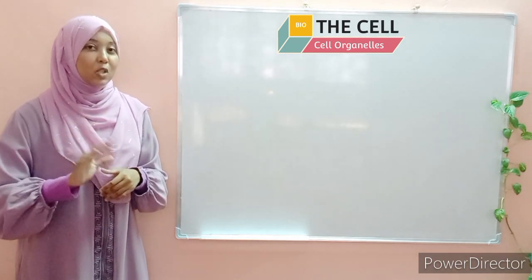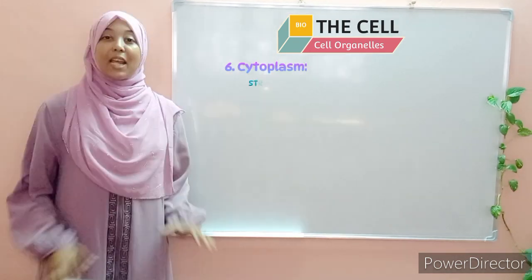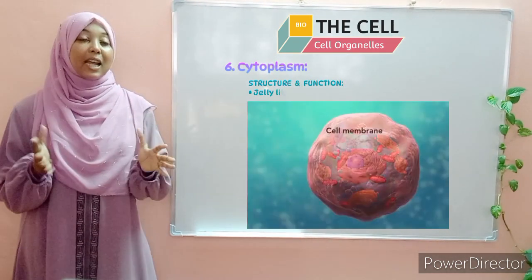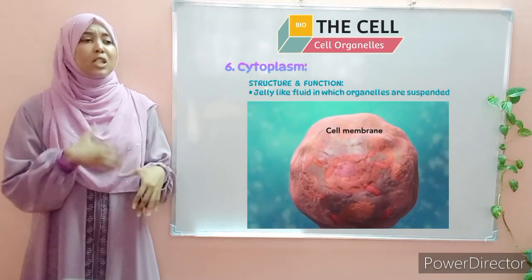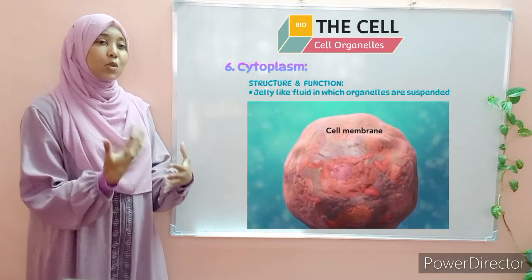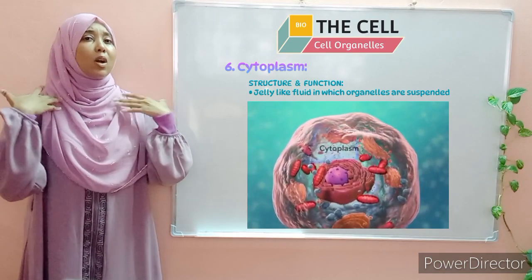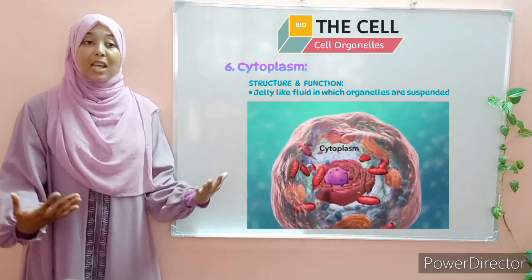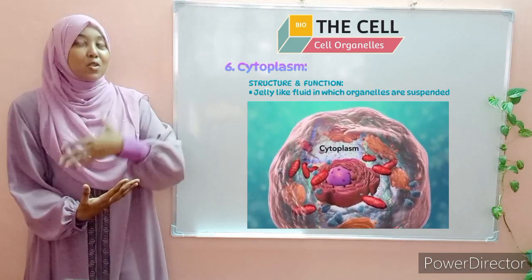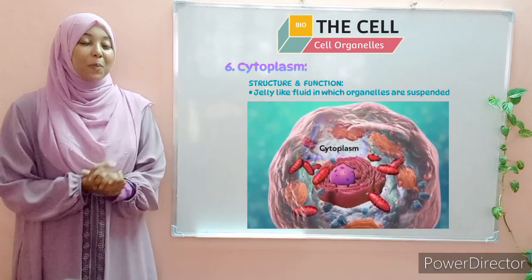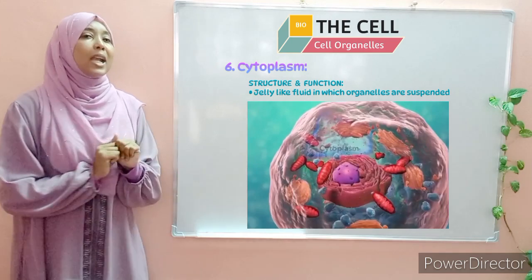Moving on to our next organelle — the cytoplasm. The cytoplasm is a jelly-like fluid in which organelles are suspended. So the organelles we are discussing — the nucleus, the endoplasmic reticulum, the mitochondria — are found in the cytoplasm.